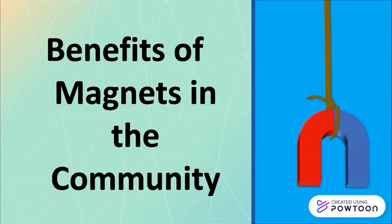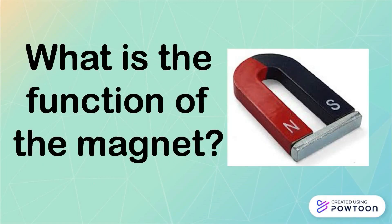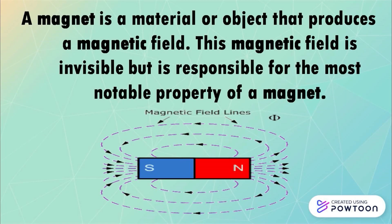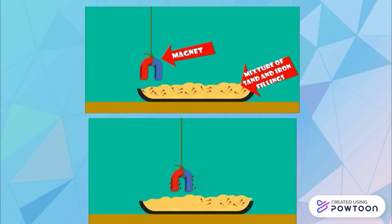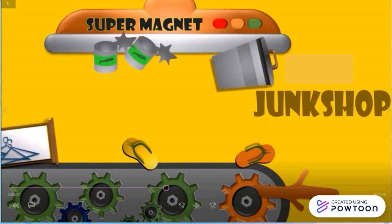Benefits of magnets in the community. A magnet is a material or object that produces a magnetic field. This magnetic field is invisible but is responsible for the most notable property of a magnet. For example, if you want to separate iron filings from a mixture of sand and iron filings, you simply hover a magnet and the iron will be attracted to it. This method is also used in large junk shops to separate metal junks from non-metals.